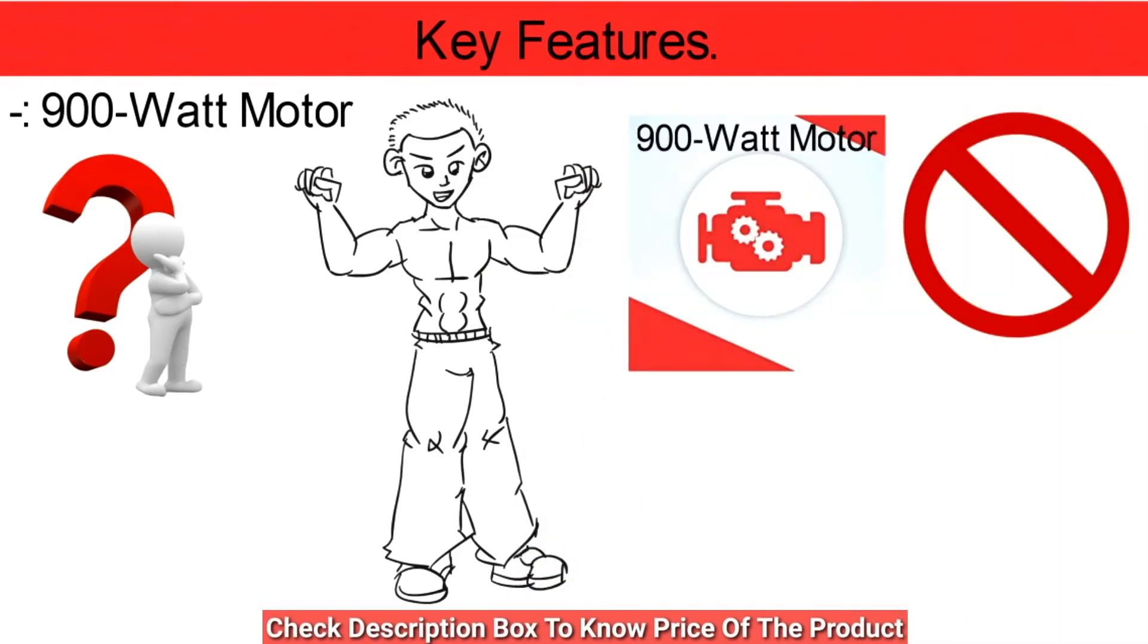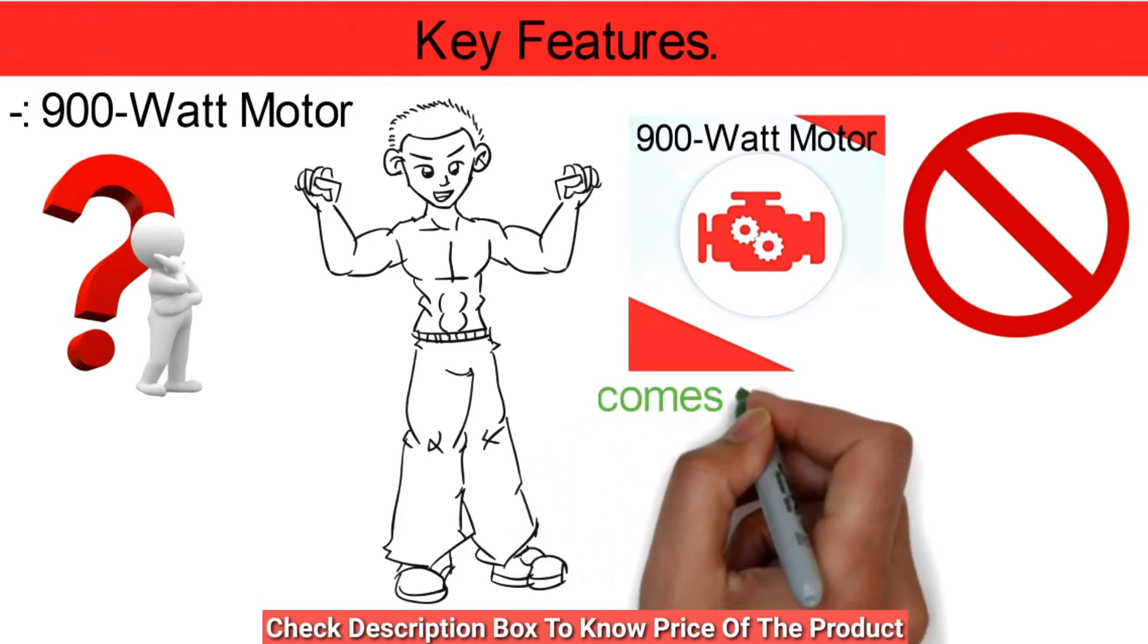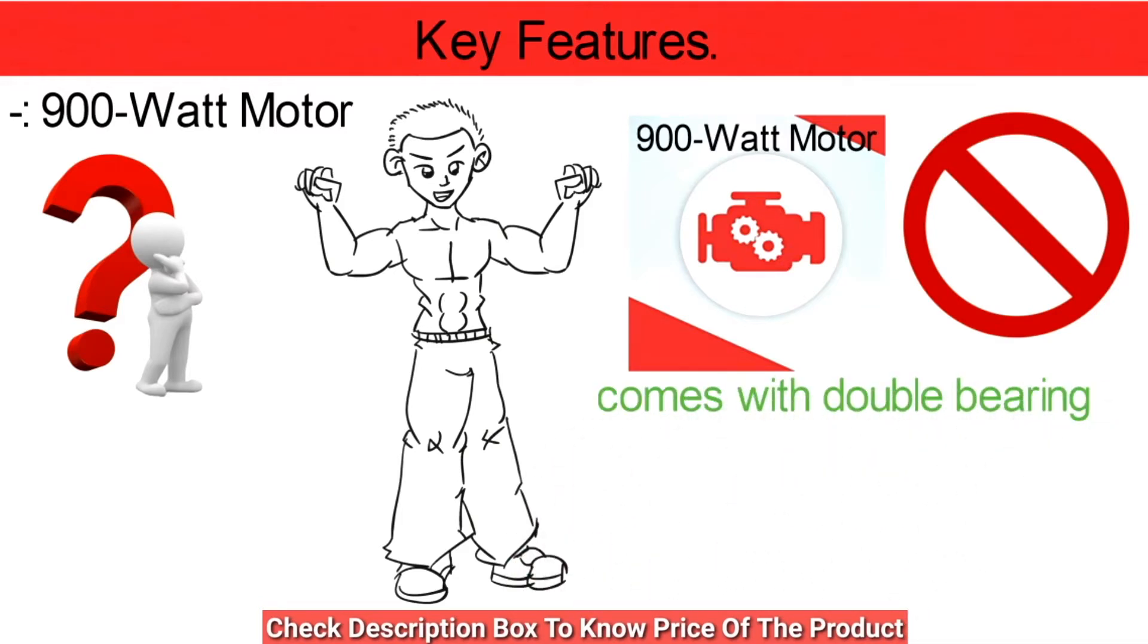How do I know? The 900 watt motor comes with double bearing for utmost performance. It's pretty low to maintain too.